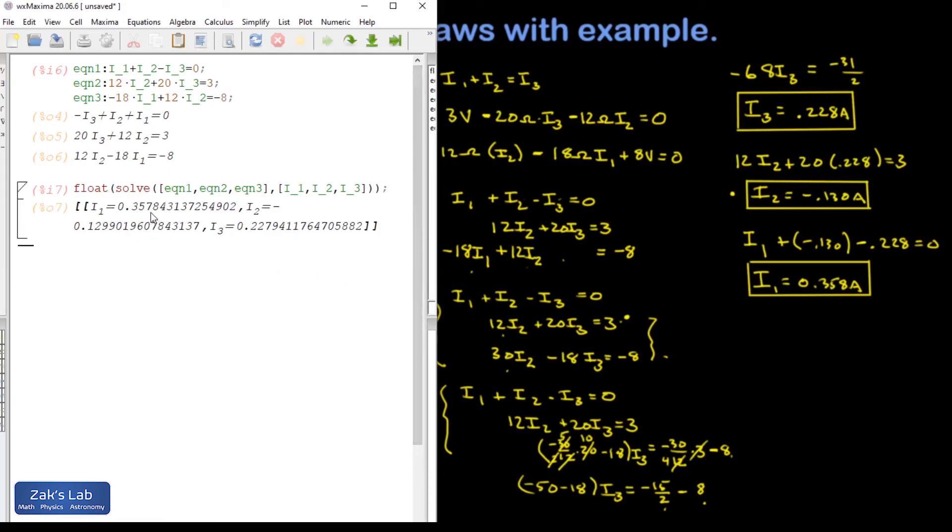I1 is 0.3578. That's 0.358, which is what we found when we did it by hand. I2 is negative 0.1299. In other words, negative 0.130. That's what we got by hand. And then I3 is 0.228 when I round it. And that's what I got by hand. So this is good. Maxima agrees with our work.